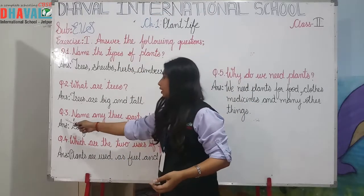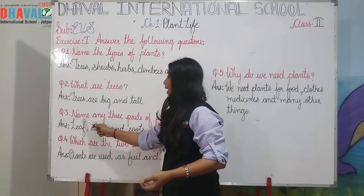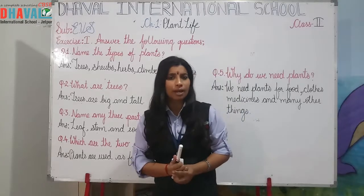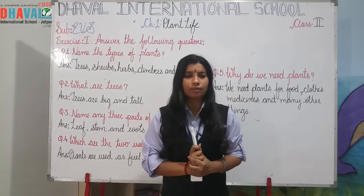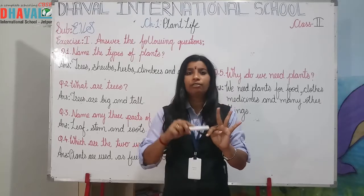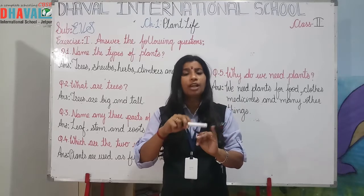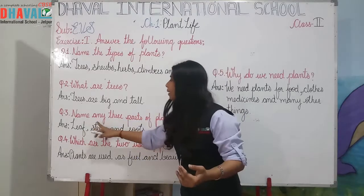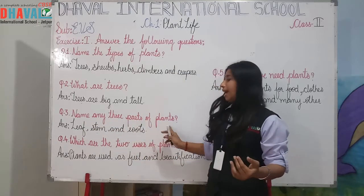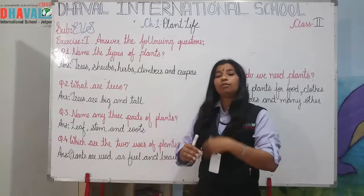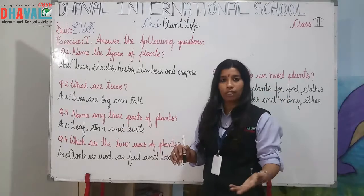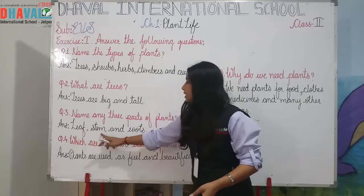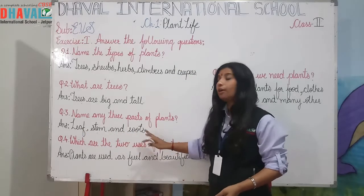Question 3: name any 3 parts of plants. We have studied 6 parts of plants — root, leaf, stem, flower, fruits. Any 3 we are asking here. I have written 3, but you can write any of the 3 of your choice. So I have written here: leaf, stem and roots.